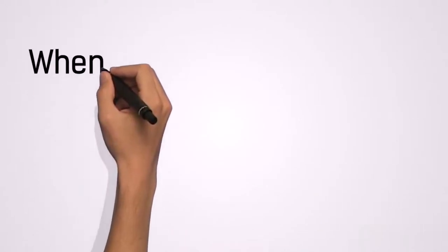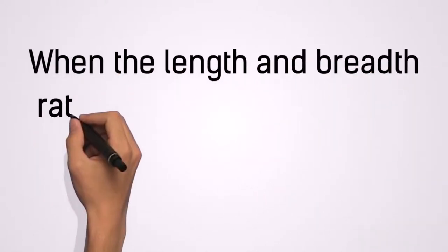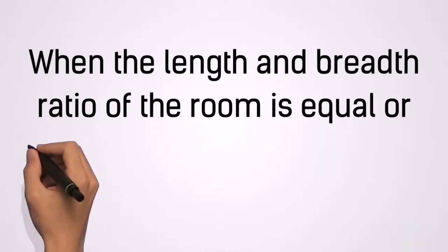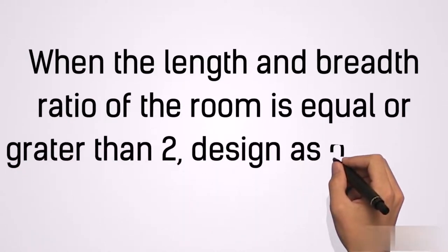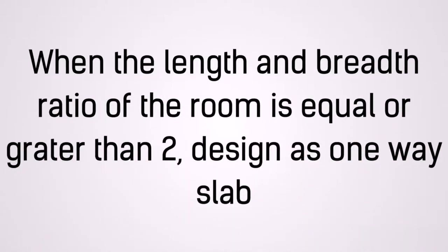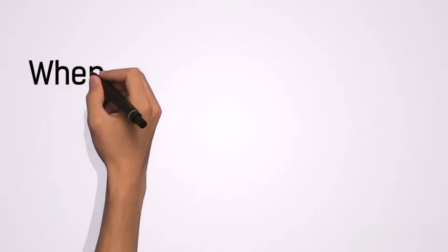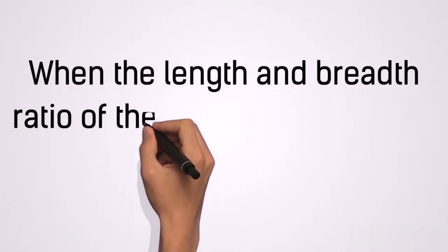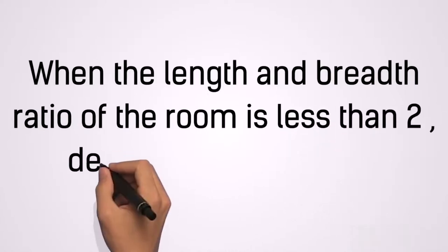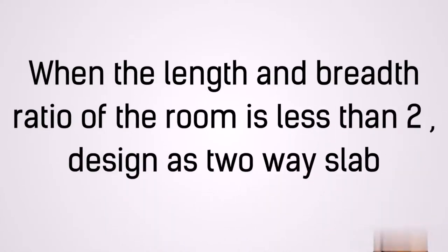When the length and breadth ratio of a room to be covered with reinforced concrete slab is two or more, we design the slab as one-way, and when the length and breadth ratio of the room to be covered with reinforced concrete slab is less than two, we design it as two-way slab.